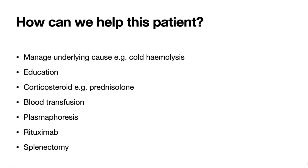We can also step up treatment to things like rituximab, which is an anti-CD20 monoclonal antibody. This will help to stop those antibodies from working and destroying the red blood cells. Finally, if there is an extravascular component to hemolysis, we can consider a splenectomy, which will prevent the patient from developing the complications of splenomegaly.